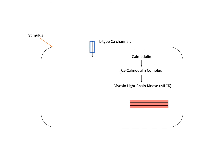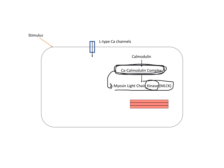When calcium comes inside the cell, it forms a complex with calmodulin called the calcium-calmodulin complex. This complex has an important feature: it activates myosin light chain kinase. If something has kinase in its name, that means the enzyme adds phosphate to its substrate. The substrate is, of course, myosin light chain. So phosphate is added to the myosin light chain.